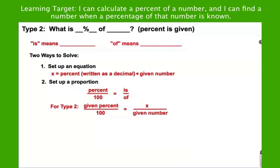This type, the second type, is finding a percent of a number. On both of these types, we're going to be given the percent. So the first one, we were given two numbers and asked to find the percentage. Now we're going to be given the percent and asked to find the number.